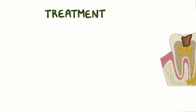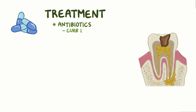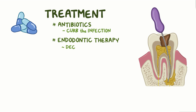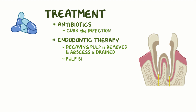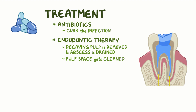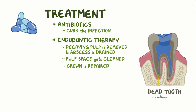Treatment of periapical lesions usually involves antibiotics to curb the infection. Then an endodontic therapy is performed where the decaying pulp is removed and the abscess is drained. The pulp space gets thoroughly cleaned and disinfected, while the tooth crown is repaired, allowing the dead tooth to continue doing its mechanical function of chewing.